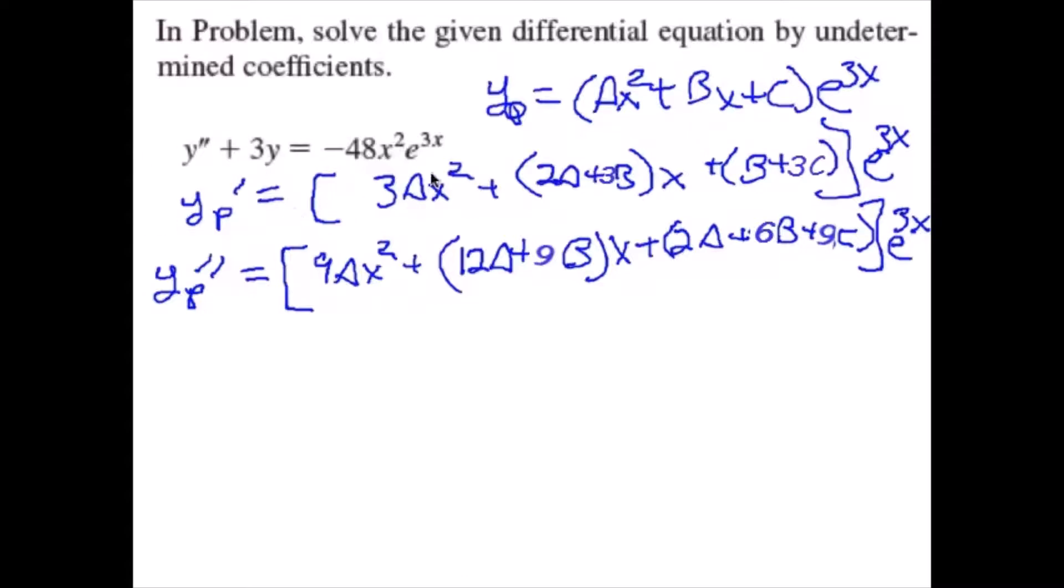Plugging into our differential equation y double prime plus 3y equals negative 48x squared e to the 3x, we get a couple equations.